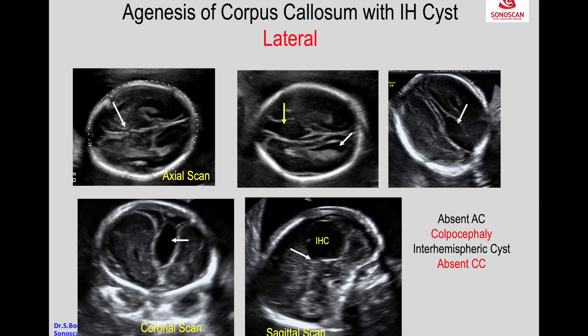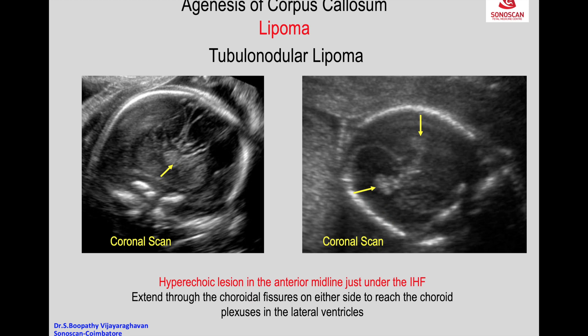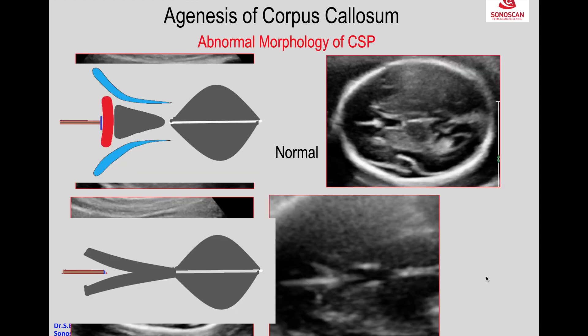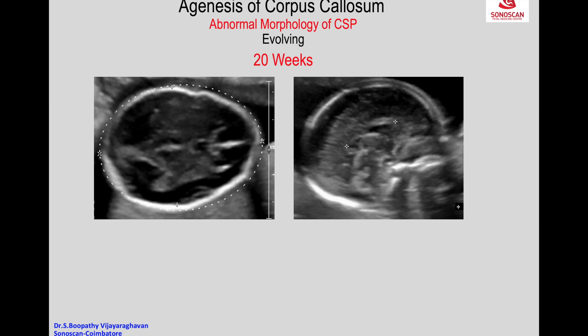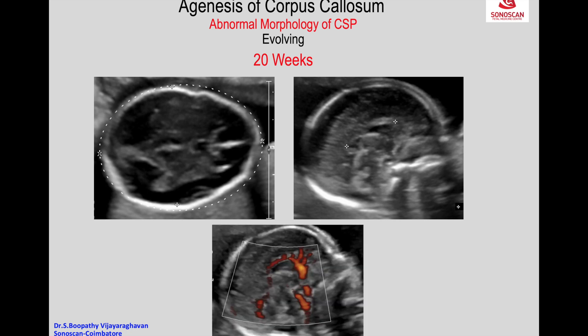This interhemispheric cyst is not necessarily the lateral ventricles. If you closely look at it, this is the normal appearance of the anterior complex. Here you see the V-shaped appearance of the cavum, so it looks normal, and the pericalosal artery also appears normal.